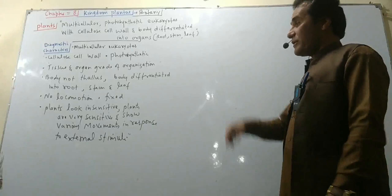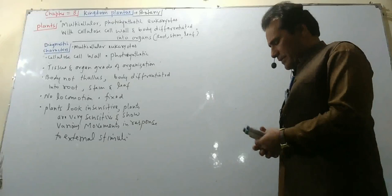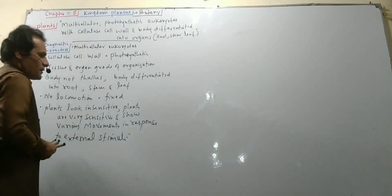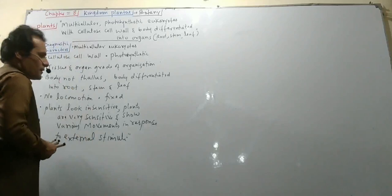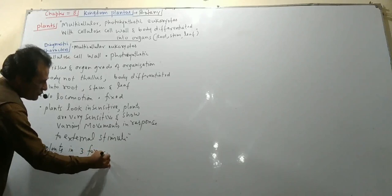When a plant is stimulated by external stimuli, the plant responds to it. Plants are sensitive to external stimuli. Plants exist in three life forms: herbs, shrubs, and trees.